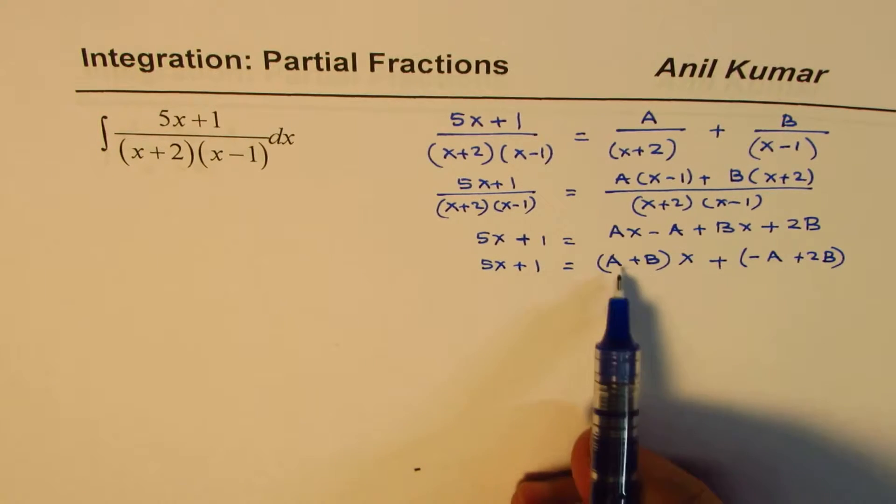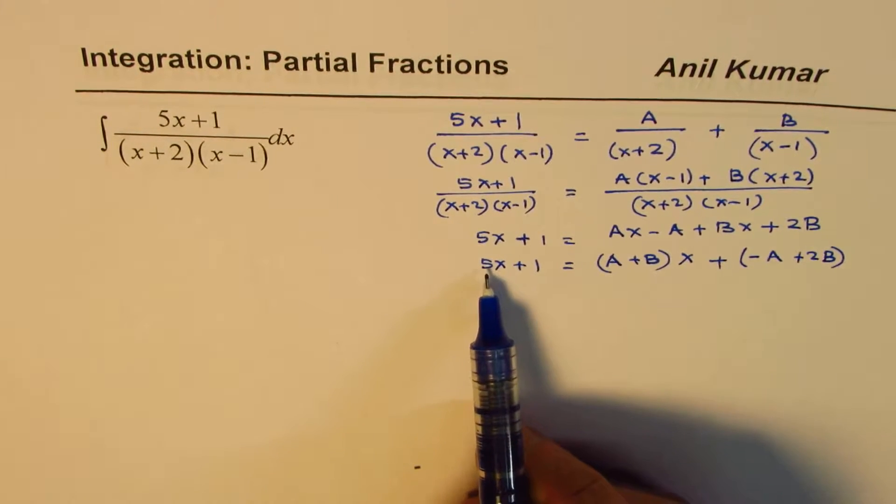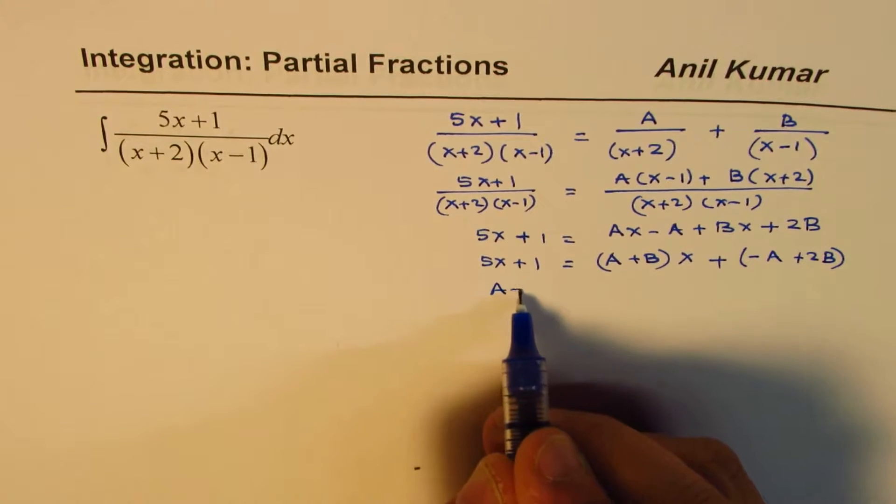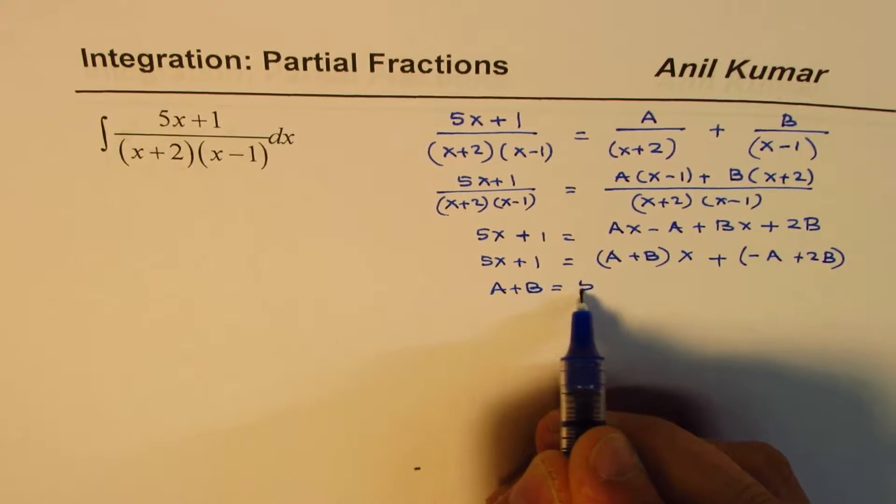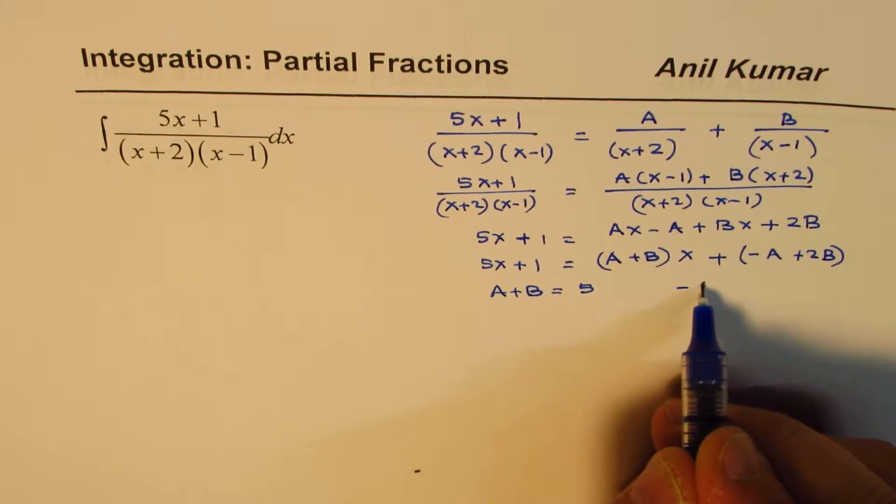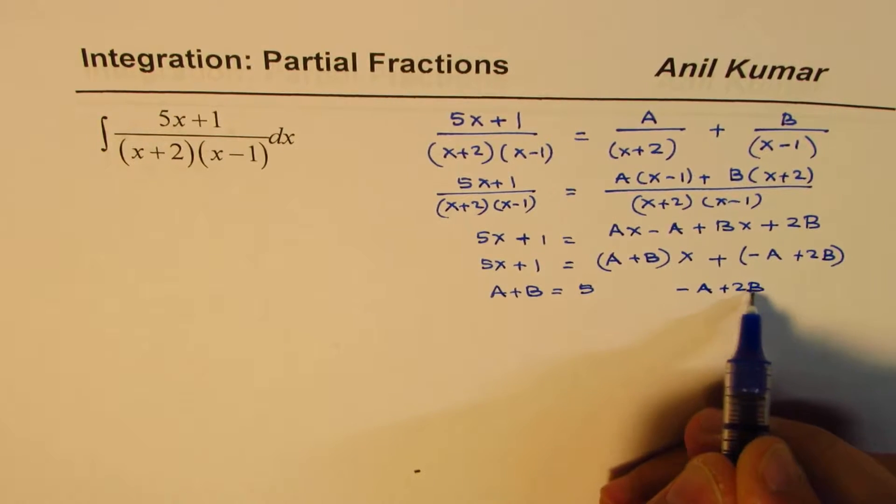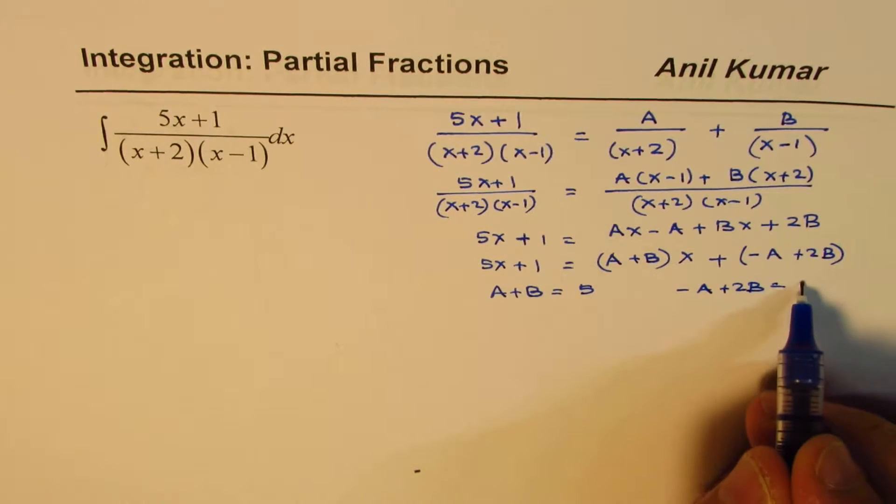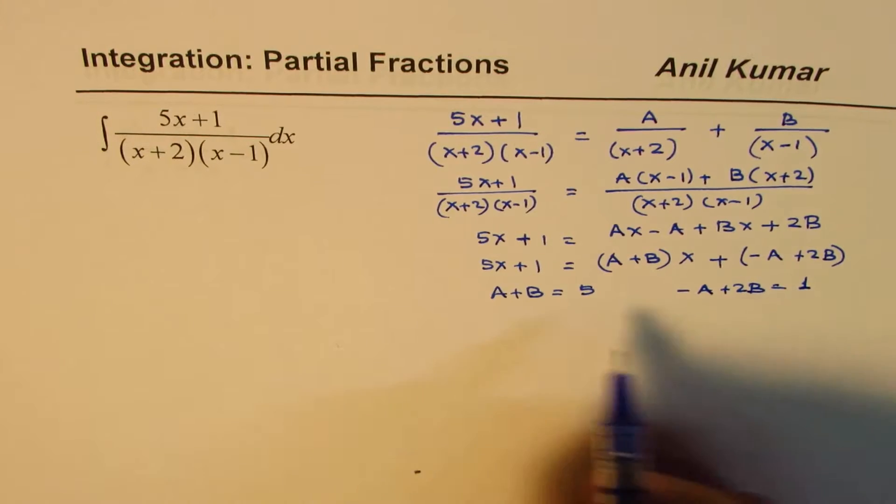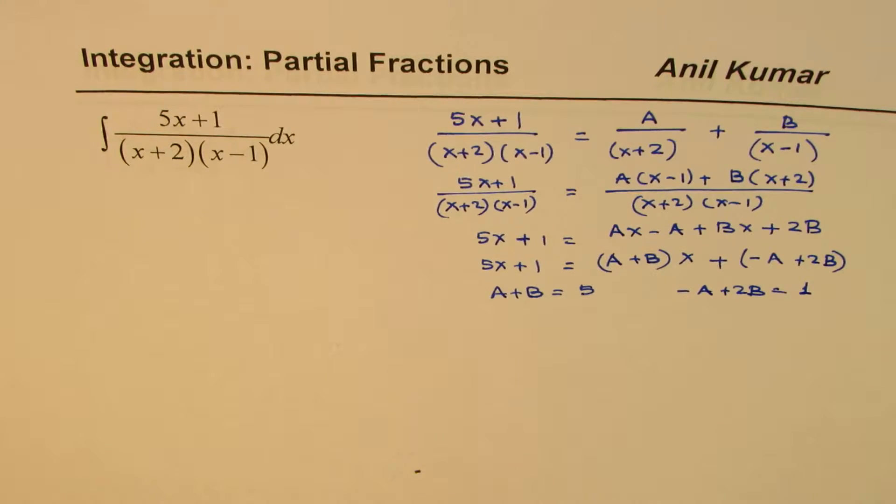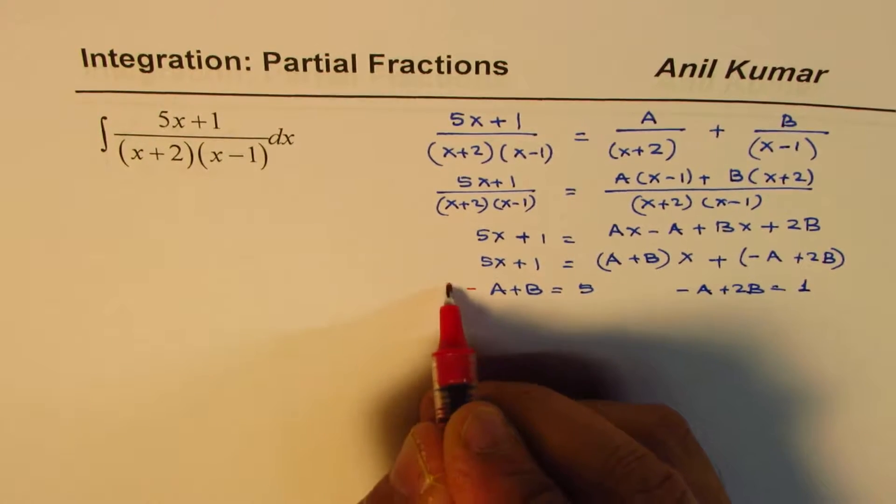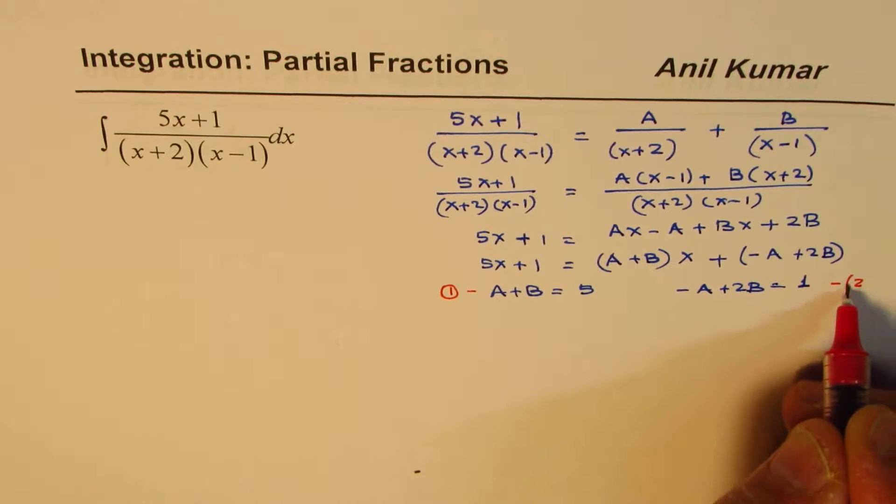And on the left side, we have 5x plus 1. If you compare the coefficients, a plus b should be equals to 5. So we could write this as a plus b equals to 5, and minus a plus 2b should be equals to the constant 1. So these are the two equations which we get. Let's number them as equation 1 and 2.